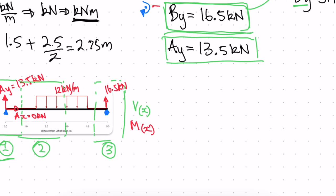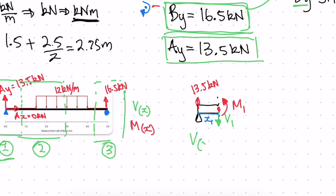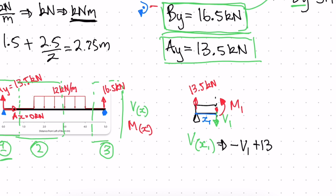Let's redraw our beam. We have our beam here with a pin support, and AY was 13.5 kilonewtons. We write V1 in the negative direction and M1 in the positive direction, with distance X1. For our shear function: negative V1 plus 13.5 kilonewtons equals zero, so V1 equals 13.5 kilonewtons.